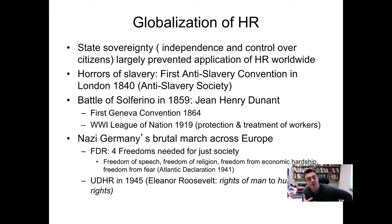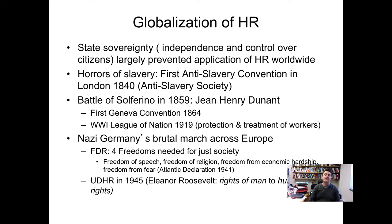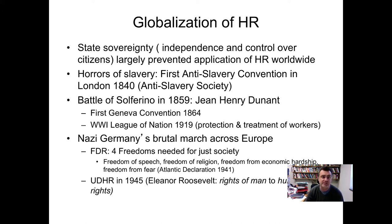FDR came up with the four freedoms: freedom of speech, freedom of religion, freedom from economic hardship, and freedom from fear. The Atlantic Charter between the US and the UK basically granted every country — the colonies — independence for joining the Allied powers against Germany. That set the foundation for the Universal Declaration of Human Rights in 1945.